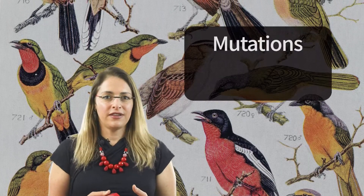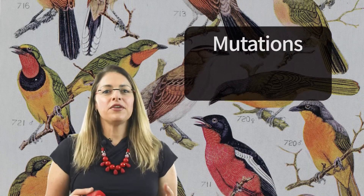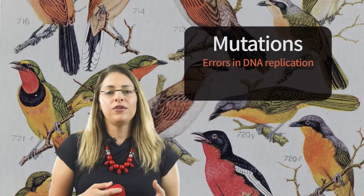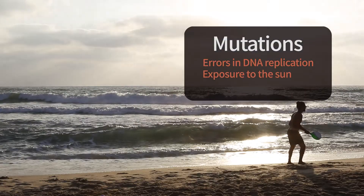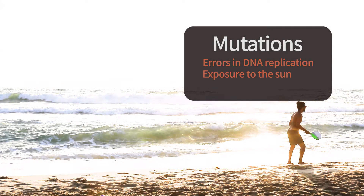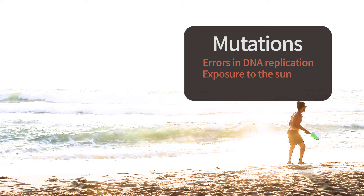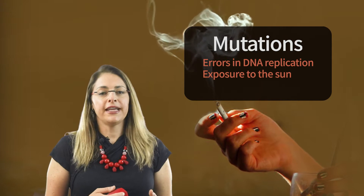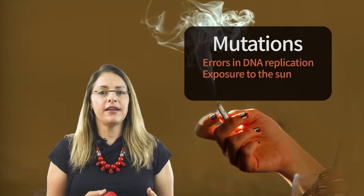Changes in DNA are called mutations. Mutation occurs due to error in DNA replication, or due to external causes like radiation from the sun or other sources, and exposure to many chemicals. Cigarette smoke, for example, is highly mutagenic and can mutate DNA in lung cells and transform them into cancer cells.